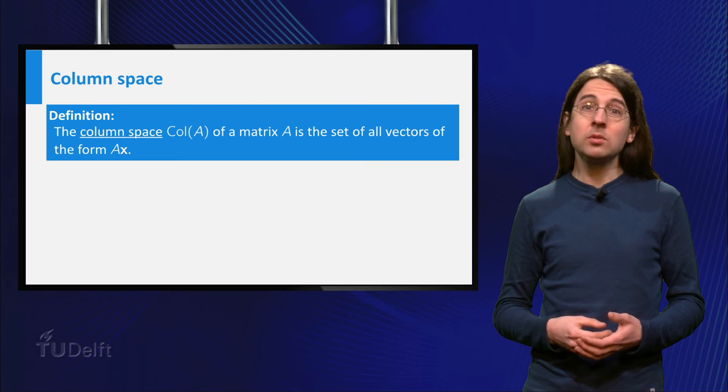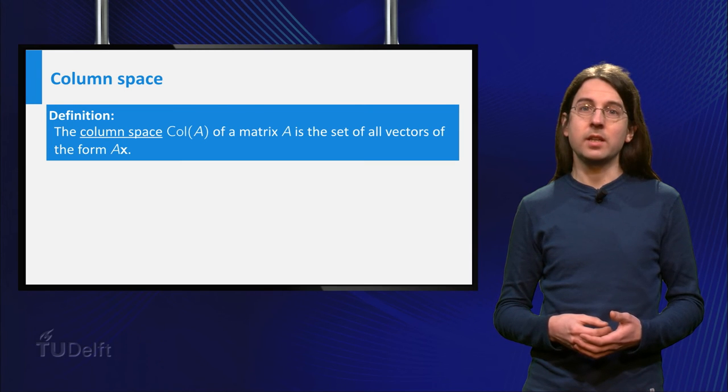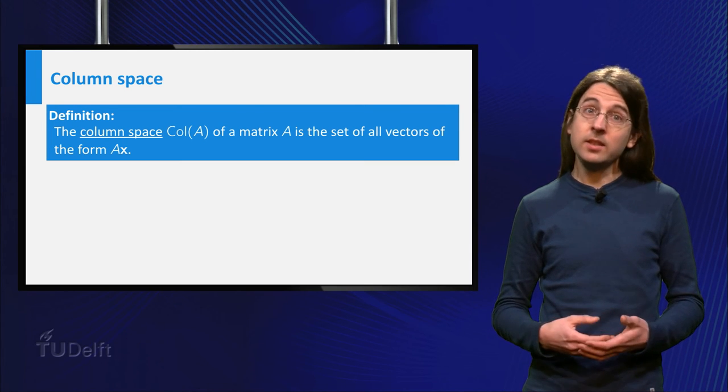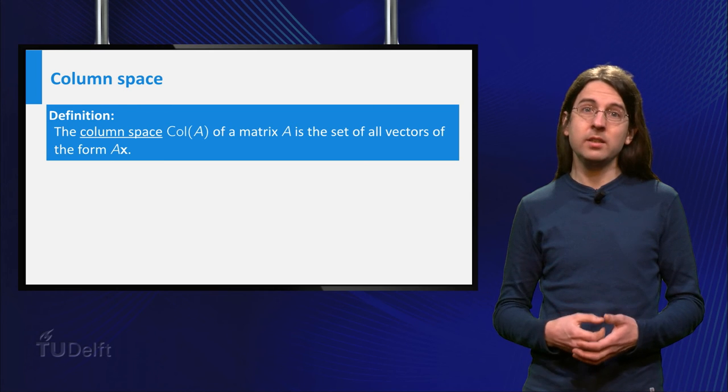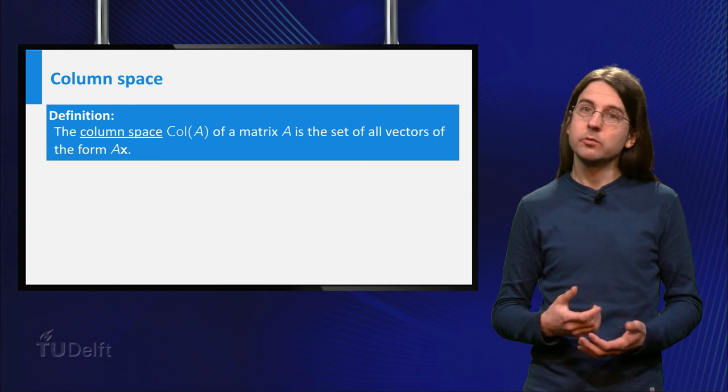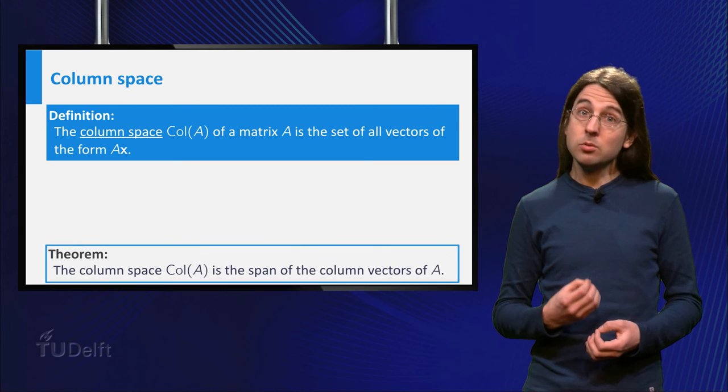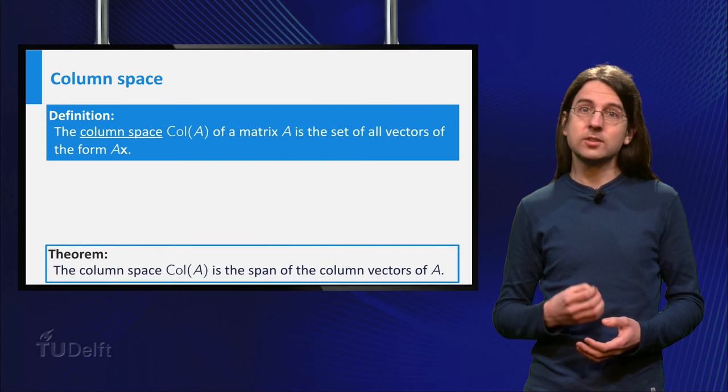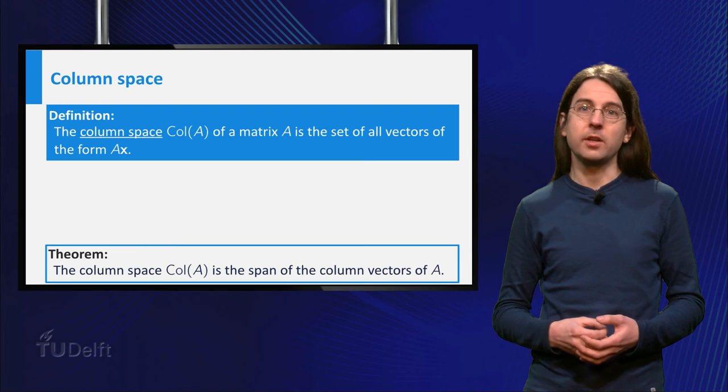Another important example is the column space of the matrix A. This is the set of all vectors which can be written as A times x, for some vector x. It is called the column space because it is the span of all the columns of the matrix A.